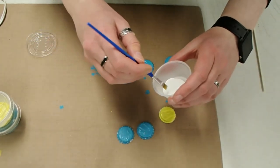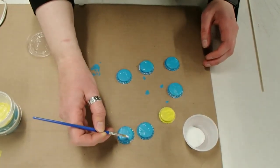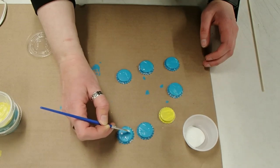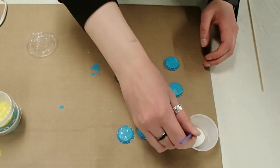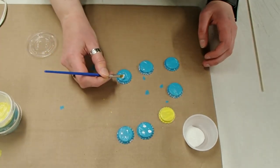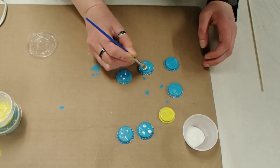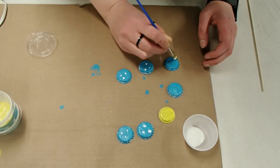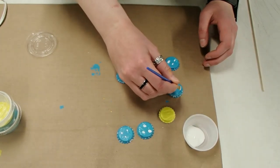So I've also got a little bit of white. So I'm just going to do a couple little dots here and there. And again, you can do dots, you can do stripes, you can do whatever you want. It is your flower.